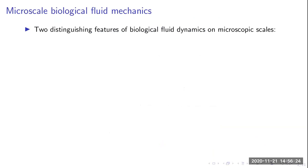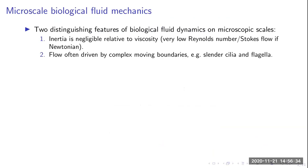There are two distinguishing features of biological fluid dynamics on microscopic scales. The first is that inertia is negligible relative to viscosity, because the length scales are small and so there simply isn't that much mass of fluid to affect the system. Viscosity and inertia scale differently, and that gives us, for Newtonian flow problems at least, Stokes flow.